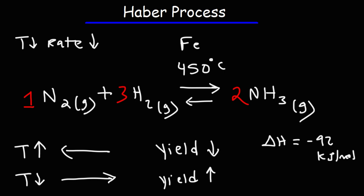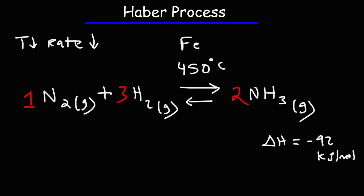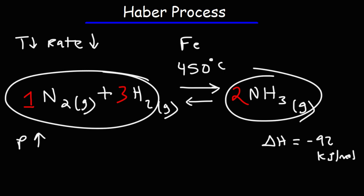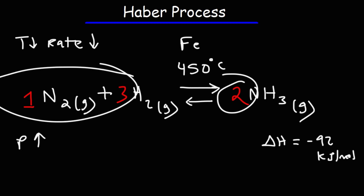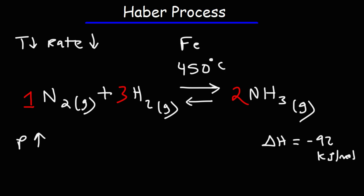A third factor that favors the formation of ammonia is pressure. If we increase the pressure, according to Le Chatelier's principle of chemical equilibrium, the system is going to try to undo the change imposed on it. So if you increase the pressure, it's going to try to decrease the pressure. In which direction must the reaction shift in order to decrease the pressure? Which side has less moles of gas? The right side has two moles of gas, while the left side has one plus three, or four moles of gas.